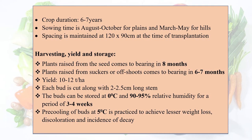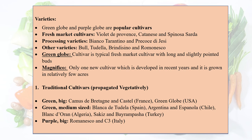There are different varieties of globe artichoke. Green Globe and Purple Globe are popular cultivars. Fresh market cultivars include Biologia, Provenance, Catanese, and Spinosa Sardha. Varieties for processing include Bainaco, Tarnatino, and Prikoyi de Jasi. Other popular varieties are Bulchudella, Brindisino, and Romansko.